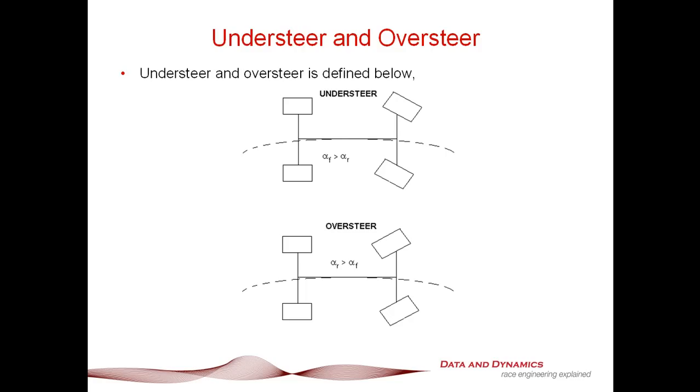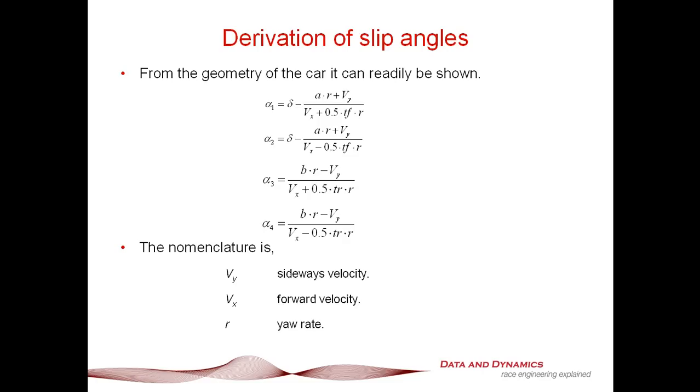One thing I really want to talk about in terms of understeer and oversteer: just remember, I just want to go back here to the derivation of our slip angles. One thing that really hit me between the nose, and when it hit me between the nose, it really transformed the way I looked at data, is the fact that the steer angle is effectively a very effective measure of the difference between what the front slip angles are doing and the rear slip angles are doing, combined with the forces that you have on the car. If you can get your head around that, you're really going to be able to make very good use of your steer channel, which is one of the reasons when I calibrate my steer channels, I actually like to show my steering input as being applied at the tire, as opposed to applied at the steering wheel.